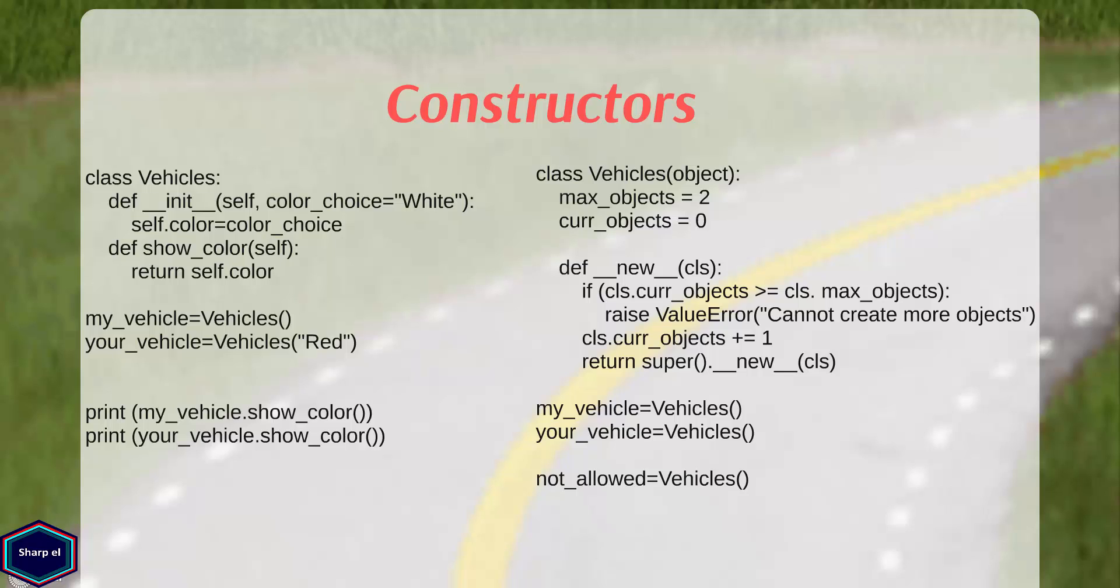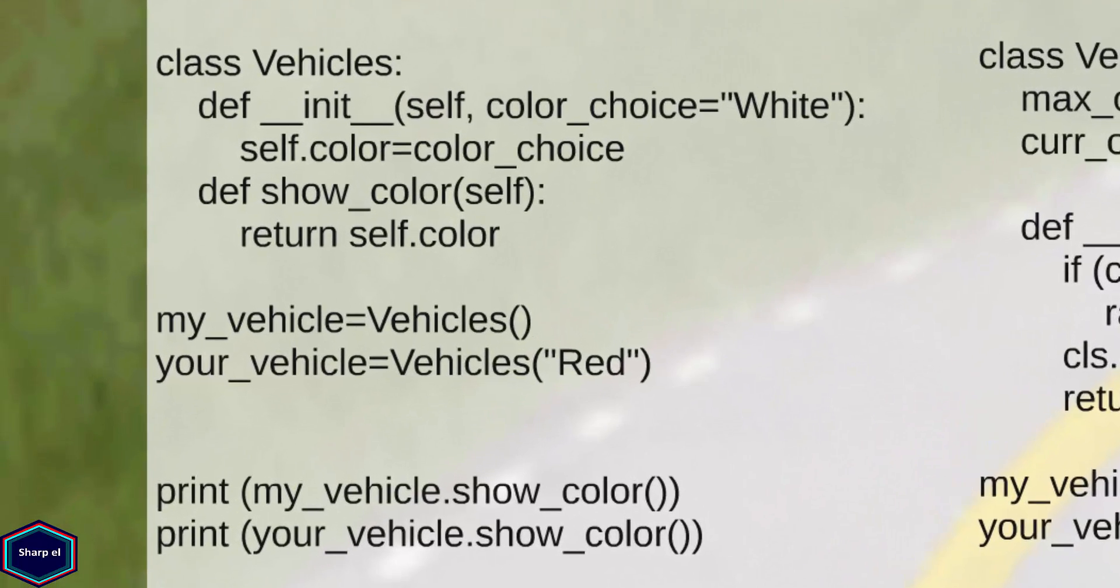Constructors are actually special methods that create and initialize objects. Again, Python is a little different than other object oriented programming languages. In Python you have constructors and also so-called initializer methods. Compared to other programming languages, constructors are rarely used in Python unless you are doing something very special. Let's see an example of initializer method.